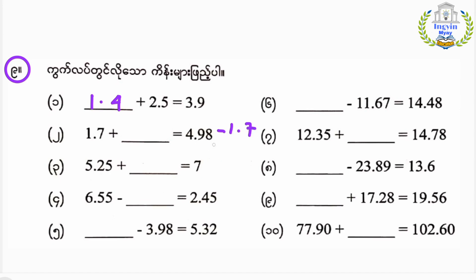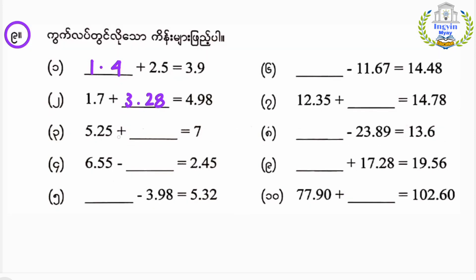Number two: This is minus five point two five. Seven minus five point two five, this is one point seven five.